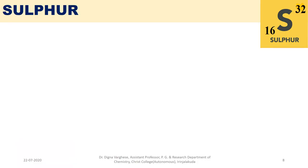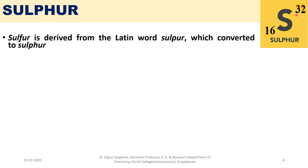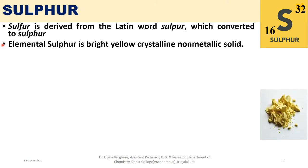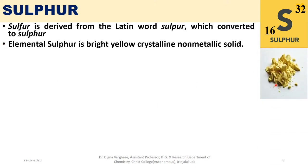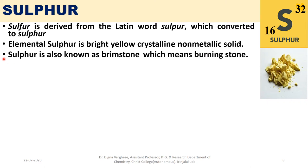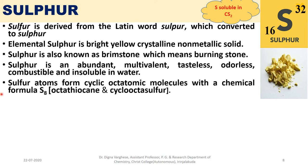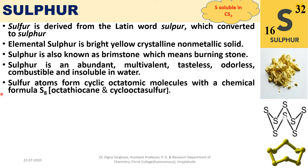Sulphur has chemical symbol S, atomic number 16, and mass number 32. The name is derived from the Latin word 'sulfur.' Elemental sulphur is a bright yellow crystalline non-metallic solid. Sulphur is also known as brimstone, meaning 'burning stone.' It is abundant, multivalent, tasteless, odourless, combustible, and insoluble in water, but soluble in carbon disulphide. Sulphur atoms form cyclic octatomic molecules with the chemical formula S₈.